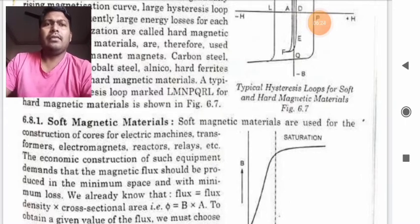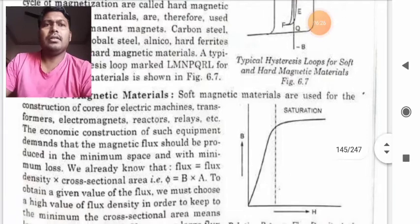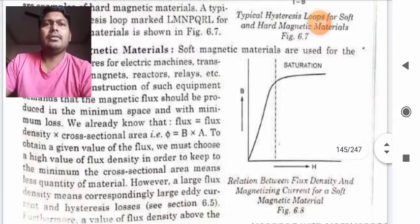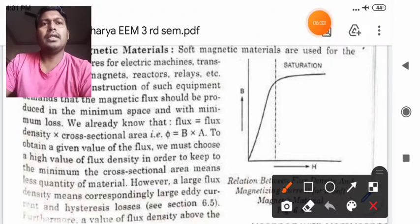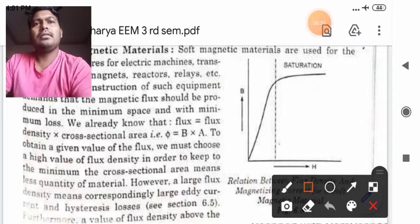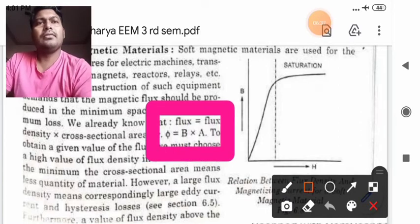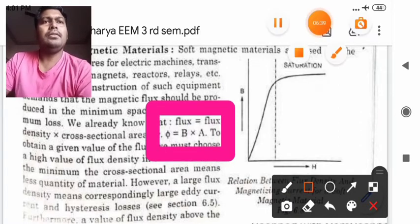We have already known that flux is equal to flux density into cross section area that is mathematically phi is equal to B into A.